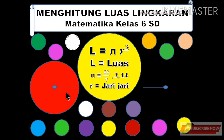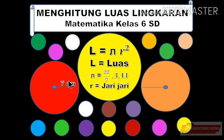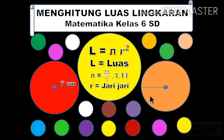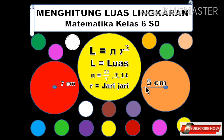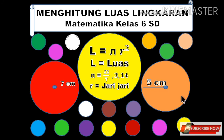Kita langsung aplikasikan ke sebuah contoh. Di sini ada sebuah lingkaran yang memiliki jari-jari 7 cm — berapakah luas lingkaran dengan jari-jari 7 cm? Kemudian lingkaran yang kedua memiliki jari-jari 5 cm — berapakah luas lingkaran yang memiliki jari-jari 5 cm? Kita mulai saja pembahasannya!